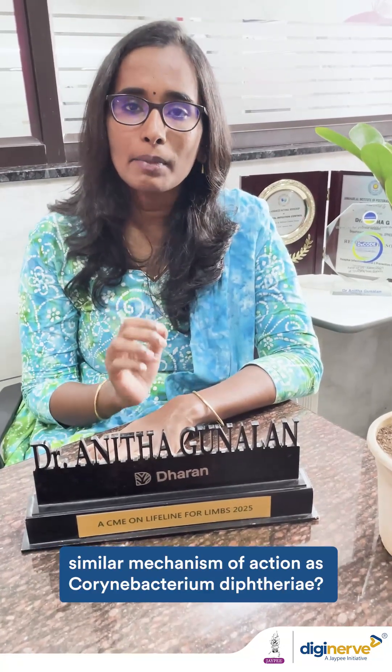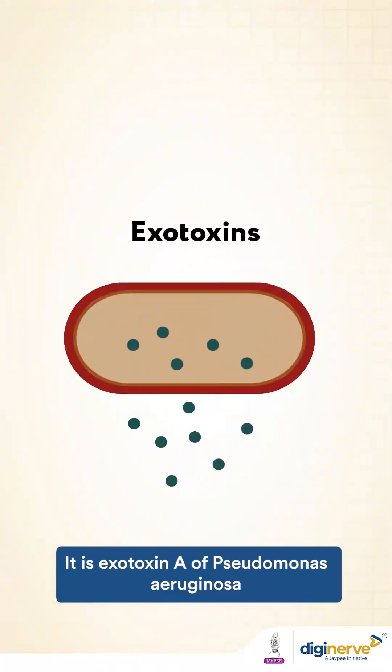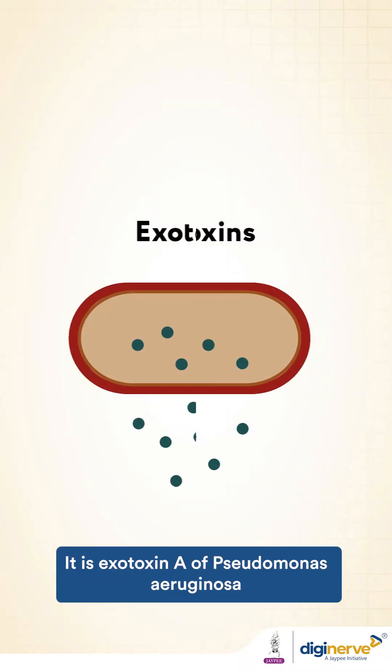Fourth point to remember: which other bacteria has a similar mechanism of action as Corynebacterium diphtheriae? It is Exotoxin A of Pseudomonas aeruginosa.